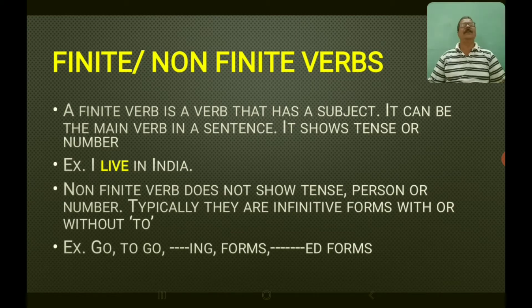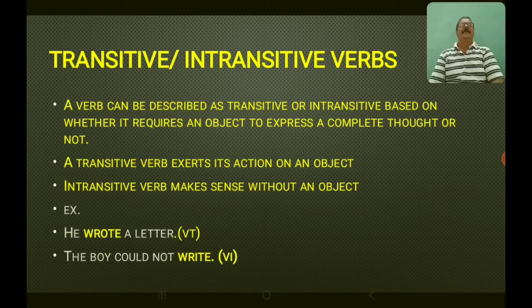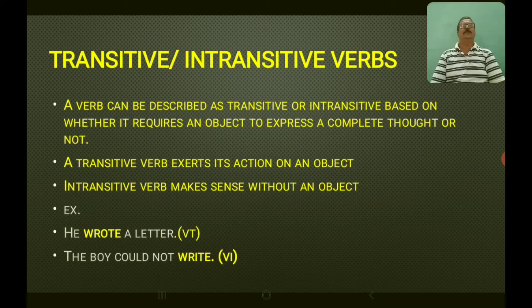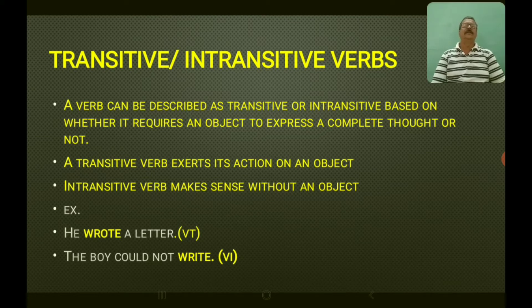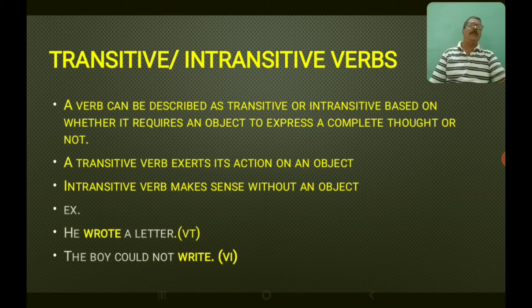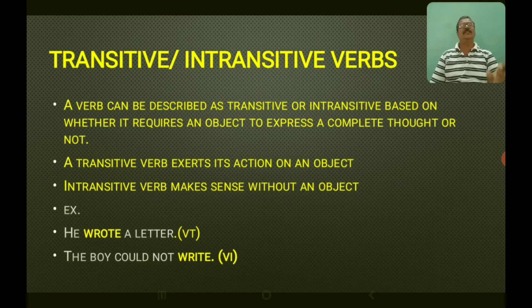Now you have the other types: transitive and intransitive verbs. A verb can be described as transitive or intransitive based on whether it requires an object to express a complete thought or not. A transitive verb exerts its action on an object. An intransitive verb makes sense without an object.